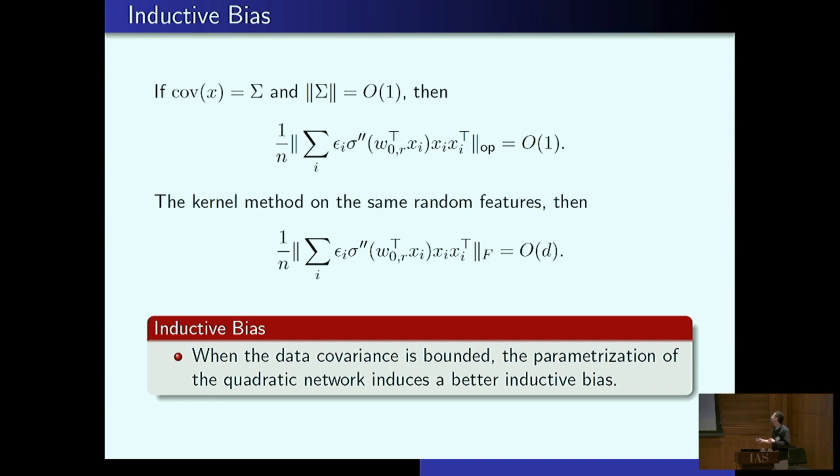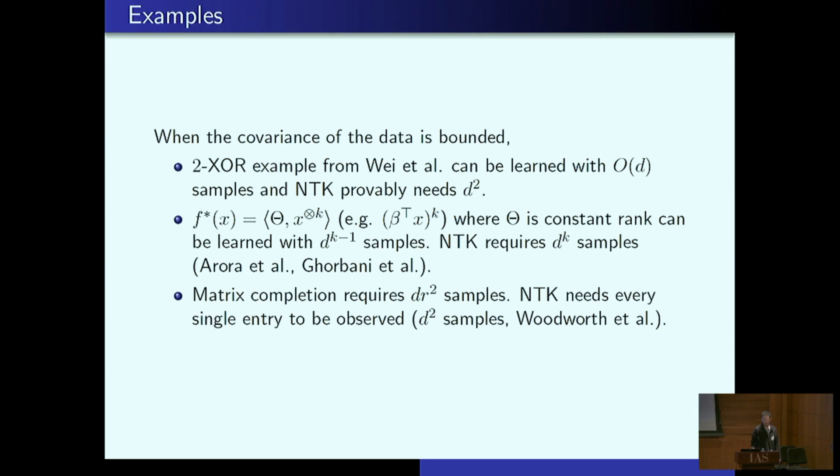So the sort of the inductive bias you get from using a quadratic parametrization is that you can utilize sort of these data assumptions here, that when it's not too far from isotropic, you can gain a dimension factor here. Okay, so let me illustrate this via the examples I had talked about earlier. For some of them, we can get to the sharp complexity. For example, in this 2xor case that I said, there's lower bounds for kernel methods. I need d squared samples because you essentially have to look at all pairs x i x j to learn a 2xor. It can be learned with order d samples now. And it's precisely, xor 2xor can be written as like a rank 2 polynomial. It can be written in this form, like with two terms or something. Okay, so more generally, if you have a target function that's a monomial or polynomial homogeneous polynomial to the kth power, but this data has some structure, so this data is low rank, so it's like a sum of low rank rank 1 tensors or something, you can learn with d to the k minus 1 samples. And then NTK needs d to the k samples.